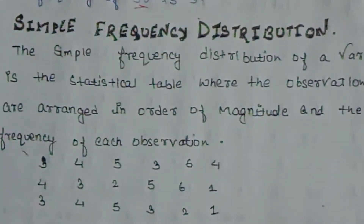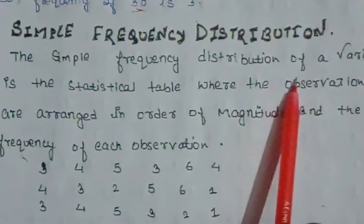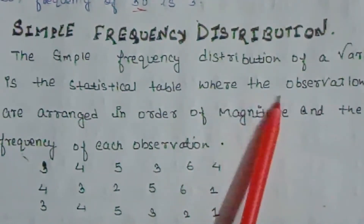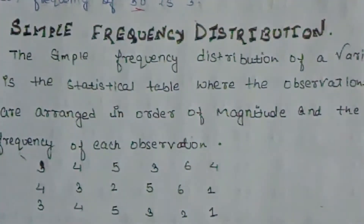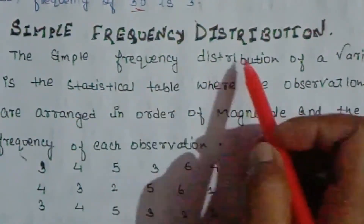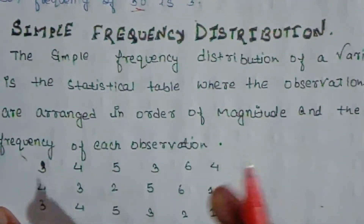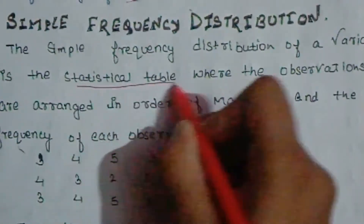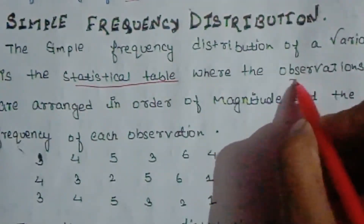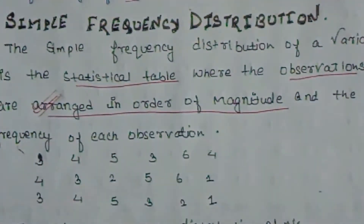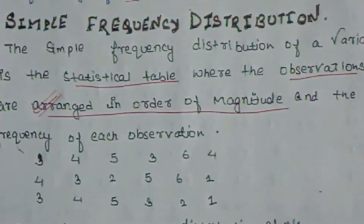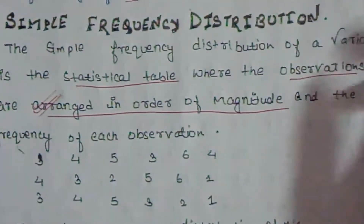Now let's move to simple frequency distribution. What is simple frequency distribution? The simple frequency distribution of a variable is a statistical table where the observations are arranged in order of magnitude and the frequency of each observation is recorded.